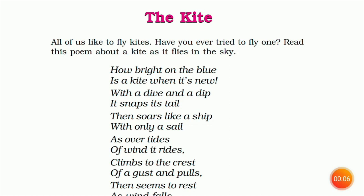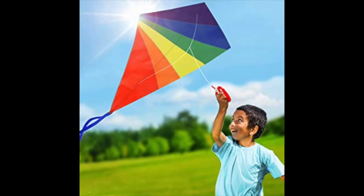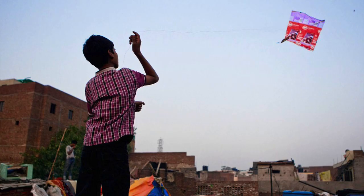The next lines read: 'Then soars like a ship with only a sail, as over tides of wind it rides.' The poet picturizes the kite's swiftness and softness in its movement. The kite creates a snap or a cracking sound in the air. So basically in the first four lines, he admires the movement of the kite — which is so vibrant, so beautiful, so swift and so soft — and it looks so good against a blue clear sky.